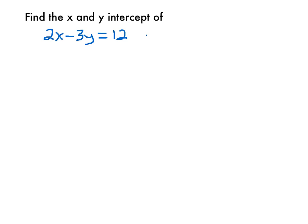When you're asked to find the x and y intercept of a linear equation, 2x minus 3y equals 12, what you're asked to do is find the x and y coordinate of where this line crosses the x-axis and where this line crosses the y-axis.